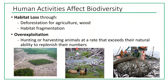Over-exploitation is hunting or harvesting animals at a rate that exceeds their natural ability to replenish their numbers. We do need to eat meat and plants, but we need to make sure that when we harvest species we do not exceed their ability to reproduce, because we don't want populations to decrease over time and eventually go extinct.